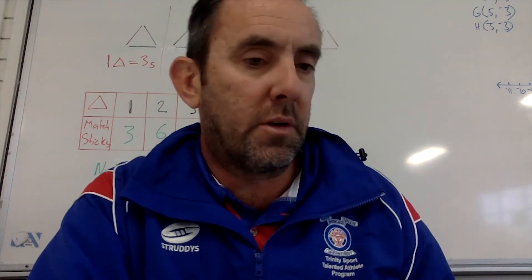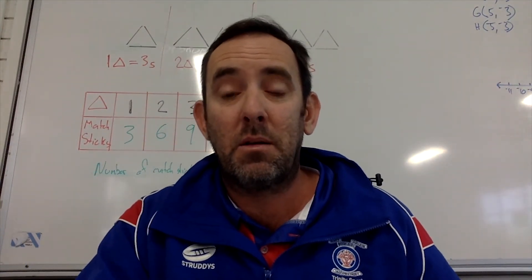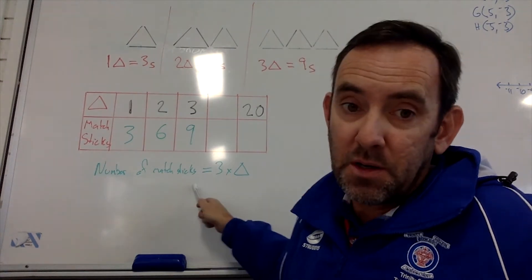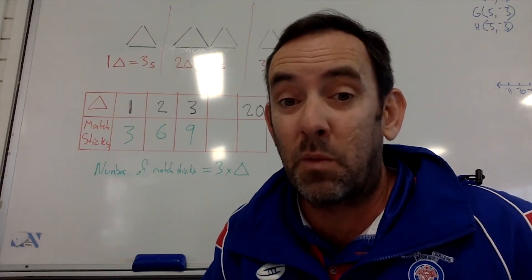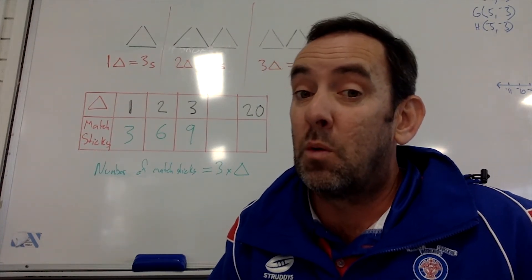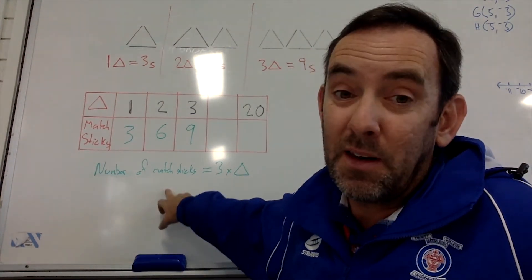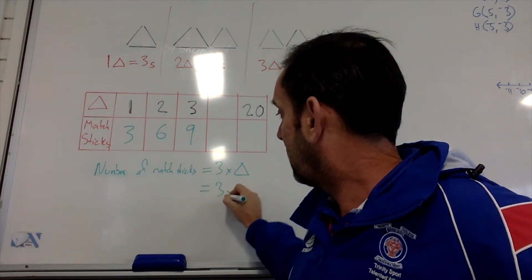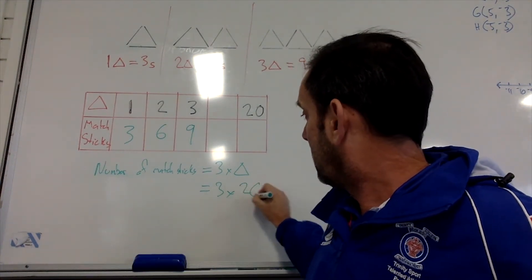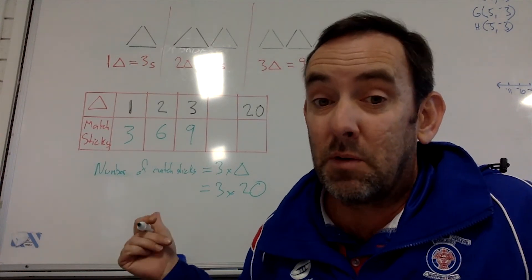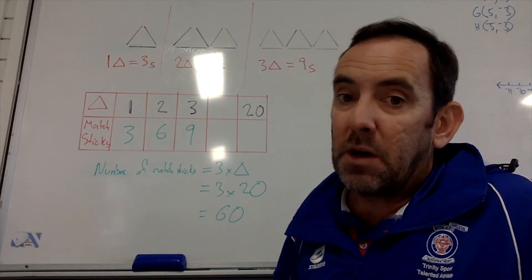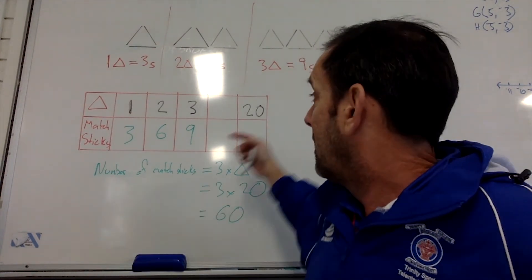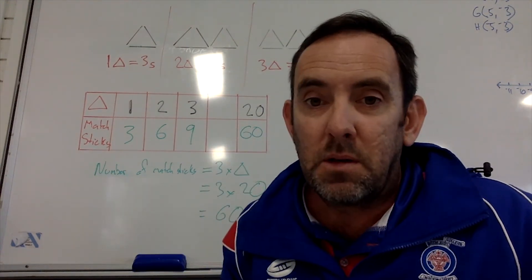The next part of worked example three asks how many matchsticks would you need if you wanted to make 20 triangles? Well, we've already established the rule: number of matchsticks equals three times the number of triangles. So if I want to make 20 triangles, I can use this rule — three times 20 equals 60 matchsticks. So in my table, 20 triangles gives me 60 matchsticks.